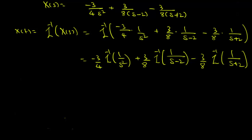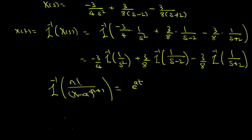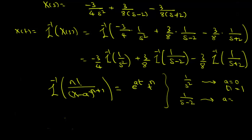We know that the Laplace inverse of n factorial divided by (s minus a) to the power of n plus 1 is e to the power of at times t to the power of n. So for 1 over s squared, we have a equal to 0 and n equal to 1. For 1 over (s minus 2), we have a equal to 2 and n equal to 0.